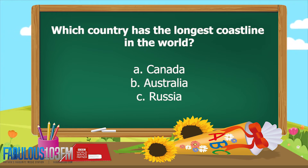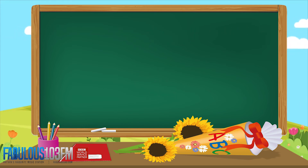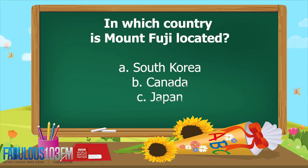New questions for today — we are again going around the world! The first question is: which country has the longest coastline in the world? Is it A, Canada; B, Australia; or C, Russia?